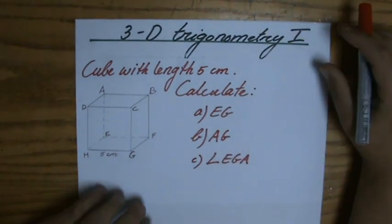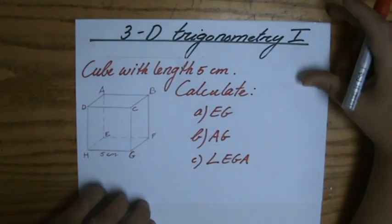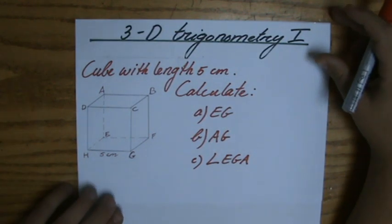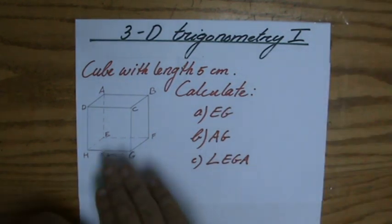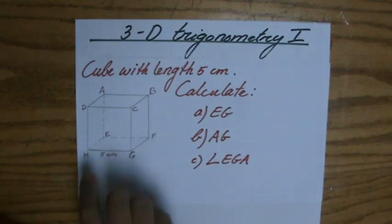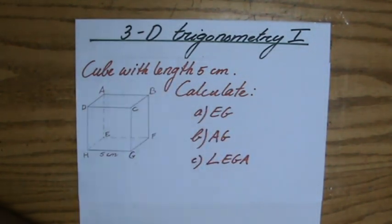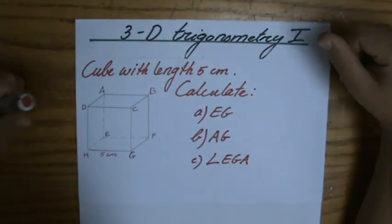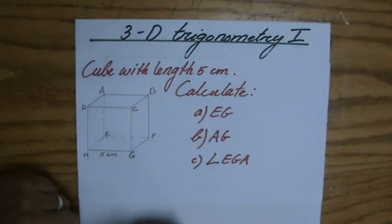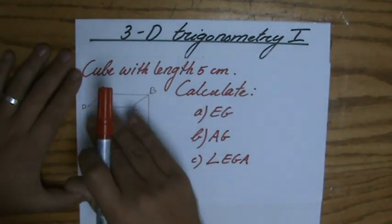Well, good afternoon, ladies and gentlemen. We're going to start doing some 3D, some three-dimensional trigonometry. This is part one. And I made a sketch here, I hope you can see it properly, of a cube with length 5 cm. And the property of a cube is that all the lengths are the same. Don't forget that. So all sides are 5 cm.